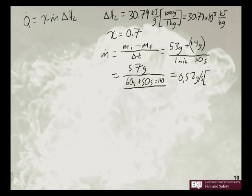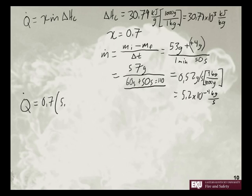So we have 0.52 divided by 1,000 is 5.2 times 10 to the negative 4th kilograms per second. And so then we can plug in all of our terms into our heat release rate equation: 0.7 times 5.2 times 10 to the negative 4th kilograms per second.